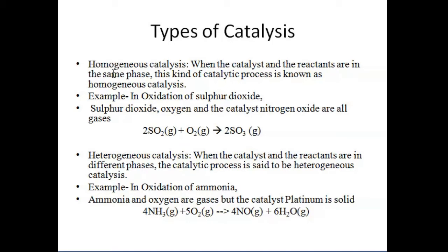In heterogeneous catalysis, the catalyst and the reactants will be in different phases. For example, in the oxidation of ammonia, it is heterogeneous catalysis because ammonia and oxygen are gases, but the catalyst used for this reaction is platinum, which is a solid. So it becomes an example of heterogeneous catalysis.